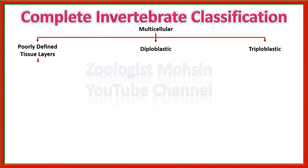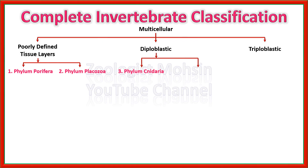Among the poorly defined tissue layers are phylum Porifera and phylum Placozoa. Porifera means sponges with a porous body, and Placozoa are lesser known phyla. Among the diploblastic, there are also only two phyla: phylum Cnidaria and phylum Ctenophora. These two phyla have only two body layers — ectoderm and endoderm — and mesoglia is present instead of mesoderm.